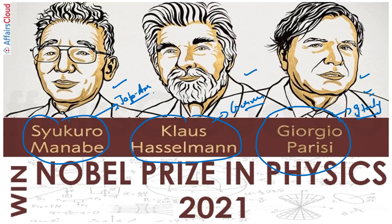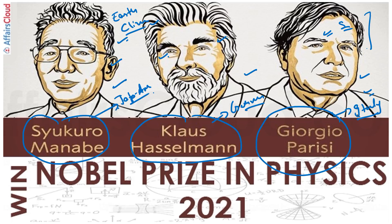The first two — Syukuro Manabe and Klaus Hasselmann — were recognized for the physical modelling of Earth's climate, quantifying variability and reliability, predicting global warming, and demonstrating how increased levels of carbon dioxide in the atmosphere lead to increased temperature at Earth's surface. Giorgio Parisi from Italy was recognized for the discovery of the interplay of disorder and fluctuations in physical systems from atomic to planetary scales.